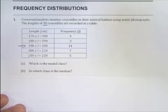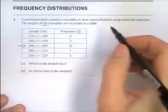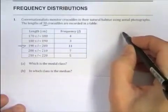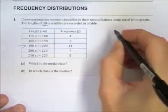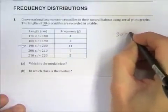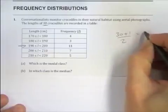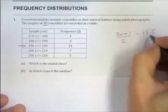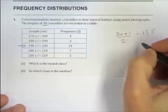Next type of question is in which is the median? In which class is the median? Well there's 30 crocodiles, so the middle value is the 15th and a half. We can work that out by doing 30 plus 1 over 2. That gives you the 15.5th value. So if we look for the 15th and 16th value.